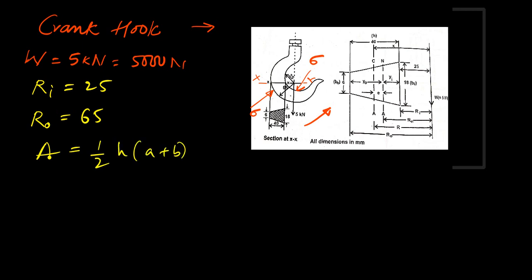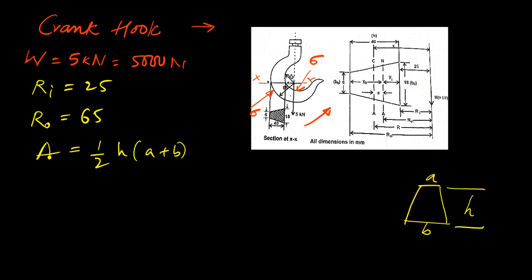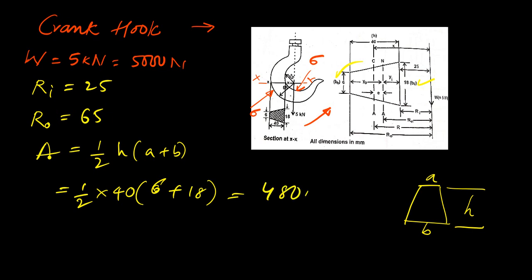For example, this is a trapezoidal shape. Say this is dimension a, this is b, and this is height h. a is given as 6, b is given as 18, and h is given as 14. So half h is equal to 40, a is 6 and b is 18. You can calculate this — the area comes out as 480 mm² as the cross-sectional area.